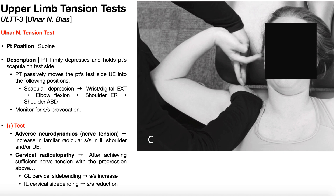Before we get into the actual maneuver, this image shows approximately what the patient's arm will look like at the end of the ulnar nerve tension test. You'll notice the wrist is in extension, and several fingers are in extension — specifically digits 3, 4, and 5. Out of those, you really need digits 4 and 5. You don't need digits 1 and 2 at all, because that's not the ulnar nerve distribution — they don't innervate digits 1 and 2.